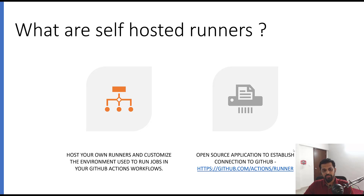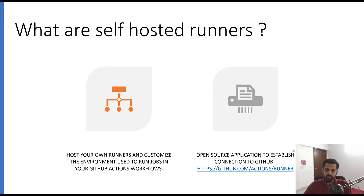So what are self-hosted runners? As the name suggests, you can host your own runners and use your own machines with the operating system of your choice to run GitHub Actions. There is an open source application called Actions Runner which establishes the communication between the machine where your runner is running and the GitHub side.